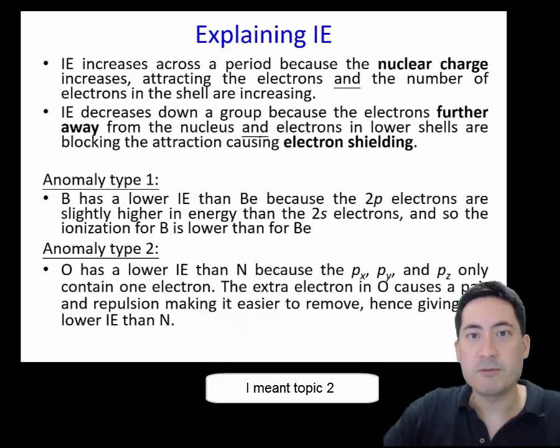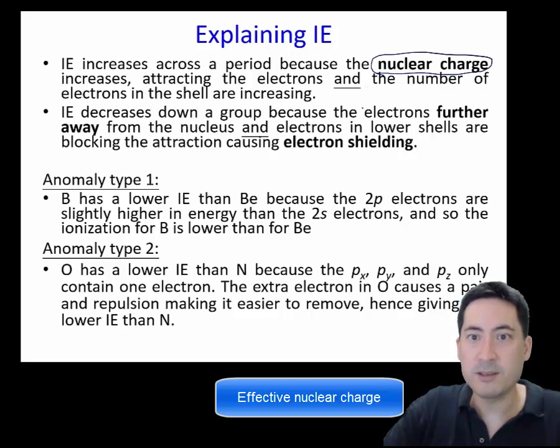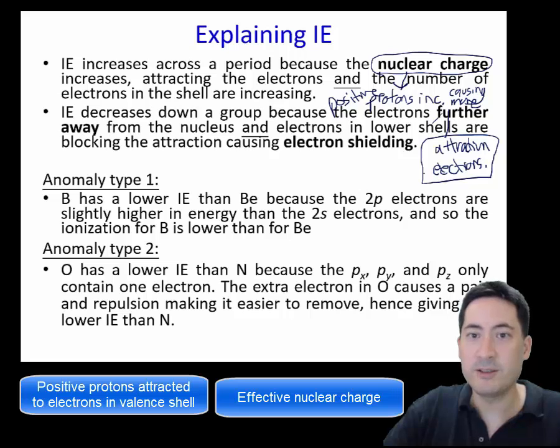So here we go. I've just put a written explanation in here. And just pay attention to the key words again. The ionization increases because the nuclear charge increases. I don't like to stop there. If you're doing a test, just double your points probably, potential of getting it right. And say, the positive protons are increasing, causing more attraction to the electrons. So basically, it's a really short, concise, keyword-rich answer that's just going to make sure you get the answer right.